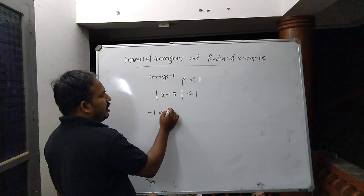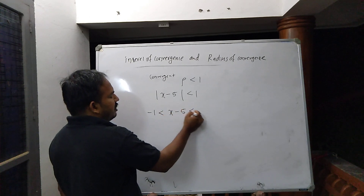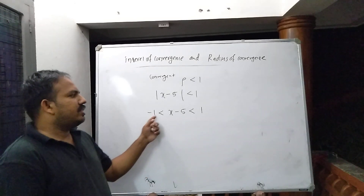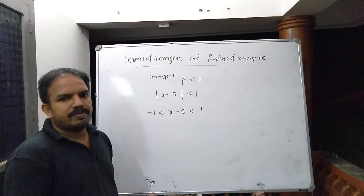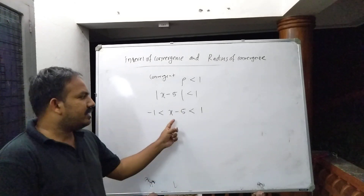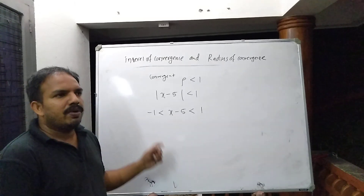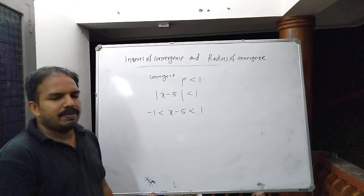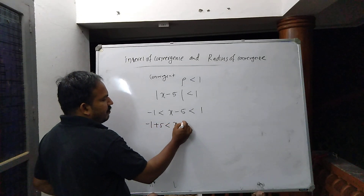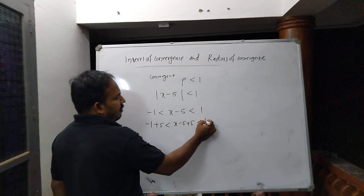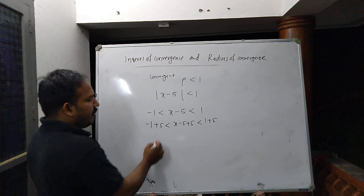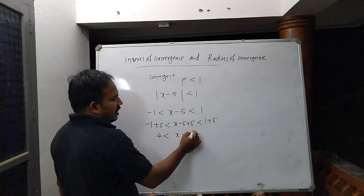From the absolute value inequality, we get minus 1 less than x minus 5 less than 1. Adding 5 to all parts: minus 1 plus 5 less than x less than 1 plus 5, which gives minus 4 less than x less than 6. So the interval of convergence is (−4, 6).